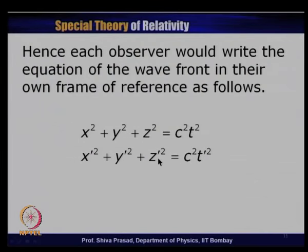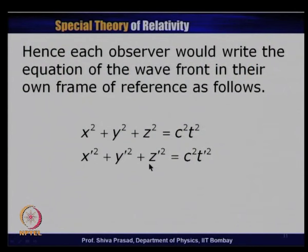Whatever transformation equations we have written are supposed to translate information from one frame to another. So if these transformation equations are correct, substituting them into the S' equation should yield the S equation back. We will now substitute the trial transformation equations for x', y', z', t' into x'² + y'² + z'² = c²t'² and try to evaluate the three remaining constants.